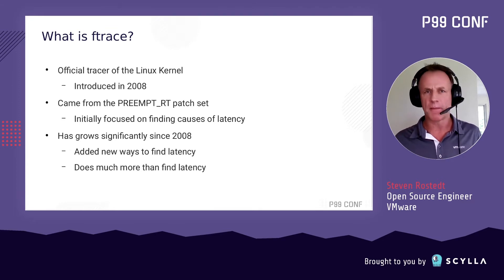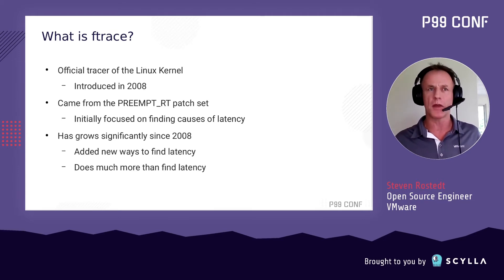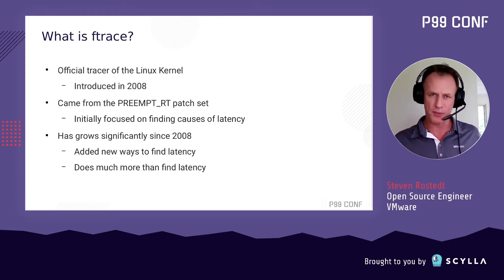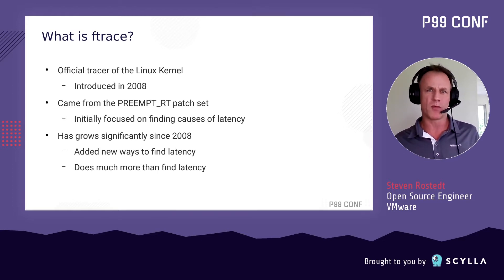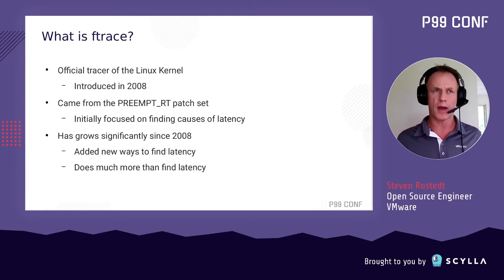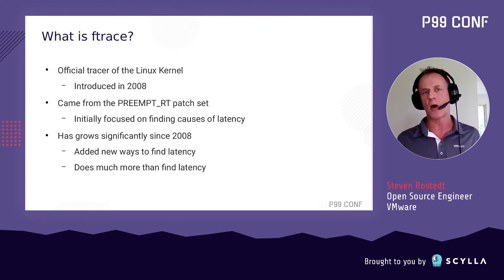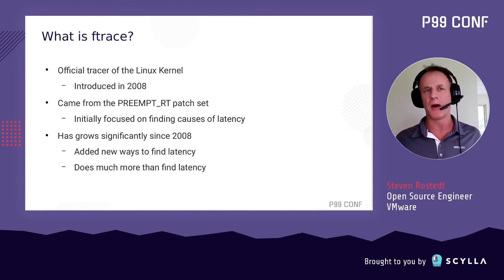To make it mainline, we had to clean it up and rewrite it. One issue with the old version: if you wanted a wake-up latency tracer, you'd compile it in, boot the kernel, and the tracer was enabled. When done, you'd compile it out and reboot. That's not something we'd encourage on production systems. So I took on the endeavor to rewrite everything from scratch, creating what is now the Ftrace infrastructure, which lets you turn tracers on and off at runtime without recompiling or rebooting.